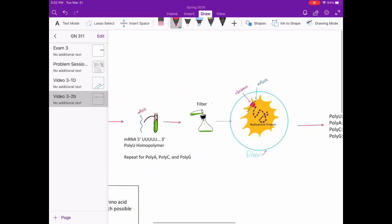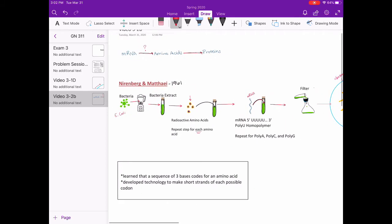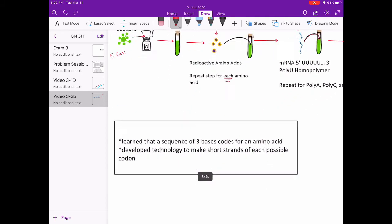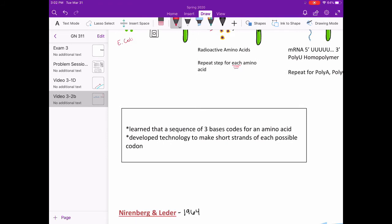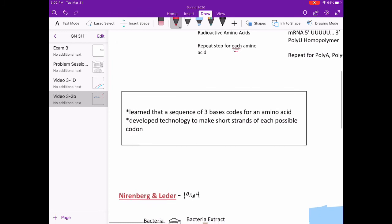Unfortunately, in 1961, it was still unsure how many bases were needed to code for one amino acid, and it was not understood how to find the start site or reading frame. It was also difficult to form synthetic mRNA in short and exact codes.